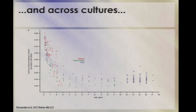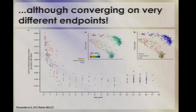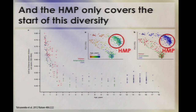We can do the same sort of thing across cultures, which I'll mostly skip since Dave covered it. I do want to make the point that we converge on very different endpoints between Americans versus Amerindian and Malawian populations. In this context, it's important to remember that the HMP, despite being a very valuable project, only covers the start of human diversity — it's only looking at Western healthy adults. There's all the rest of the space of possible microbial configurations it does not yet cover.